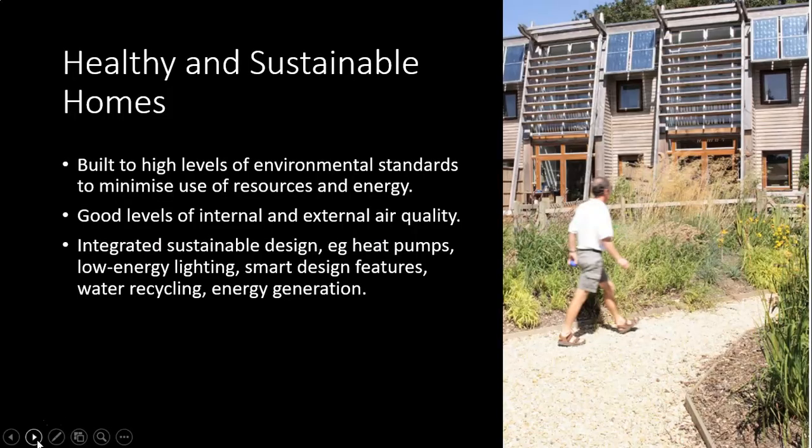It's also important to remember that when we're talking about healthy, we mean the health of the wider global systems too. We're trying to build homes that support environmental sustainability — technologies exist to build homes at a high level of environmental sustainability using different kinds of construction methods and materials to minimize the use of resources and energy. You also want good levels of internal and external air quality, related to ventilation, materials used in construction, and the quality of the surrounding environment. We also want to integrate sustainable design features like heat pumps, low energy lighting, smart design features, water recycling, and energy generation.